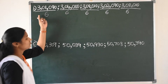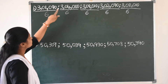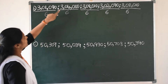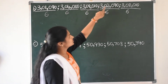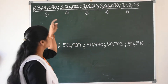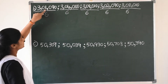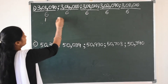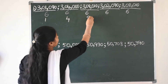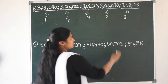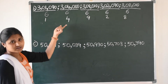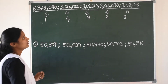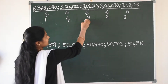Now compare the first place value — that is the lakhs place. Here 3, 3, 3, 3, 3 — same in all. So compare the 10,000 place value: 0, 0, 0, 0, 0 — also same in all numbers. Now compare the 1000 place value: 1, 4, 9, 2, 8. All different digits are there in the 1000th place. So which is the big number? We can say 9 is the big number.